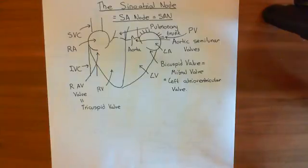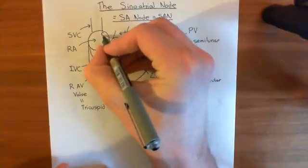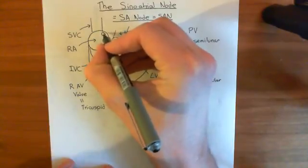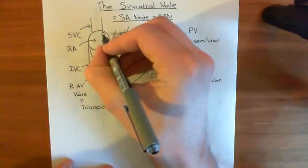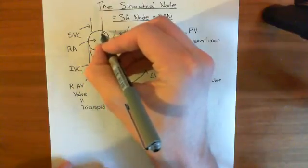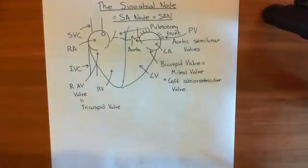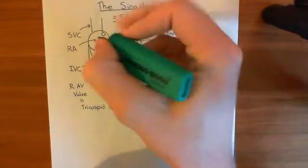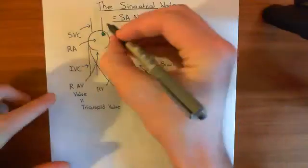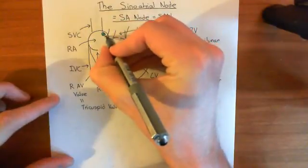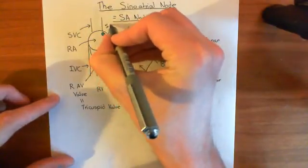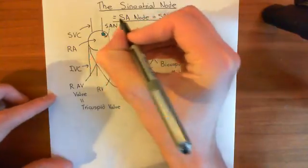Where is the sinoatrial node on this picture? Basically, it's in the tissue that makes up the right atrium, up near the top of the right atrium, nearby where the superior vena cava joins onto the right atrium. We'll highlight this in turquoise — this is the sinoatrial node, the SAN for short. When you're drawing a picture and want to label it, you'd use SAN.